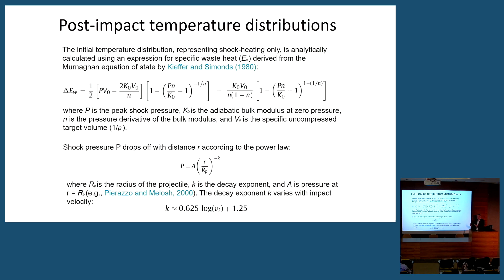And the reason for that is, I can put this analytical treatment here, where P is the peak shock pressure that's delivered, which is something that we get from the NB squared relationship, from the kinetic energy relationship. It's quite simple. We know the masses coming in. We know their velocity distributions. We can calculate this. K-naught is the adiabatic bulk modulus at zero pressure. N is the pressure derivative of this bulk modulus, and V-naught is the specific uncompressed target volume that we have.